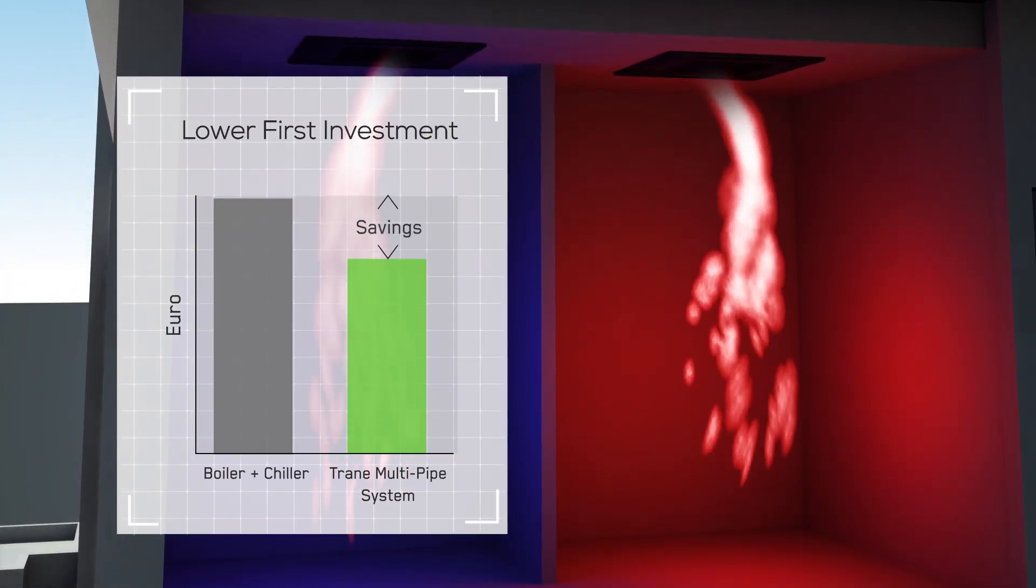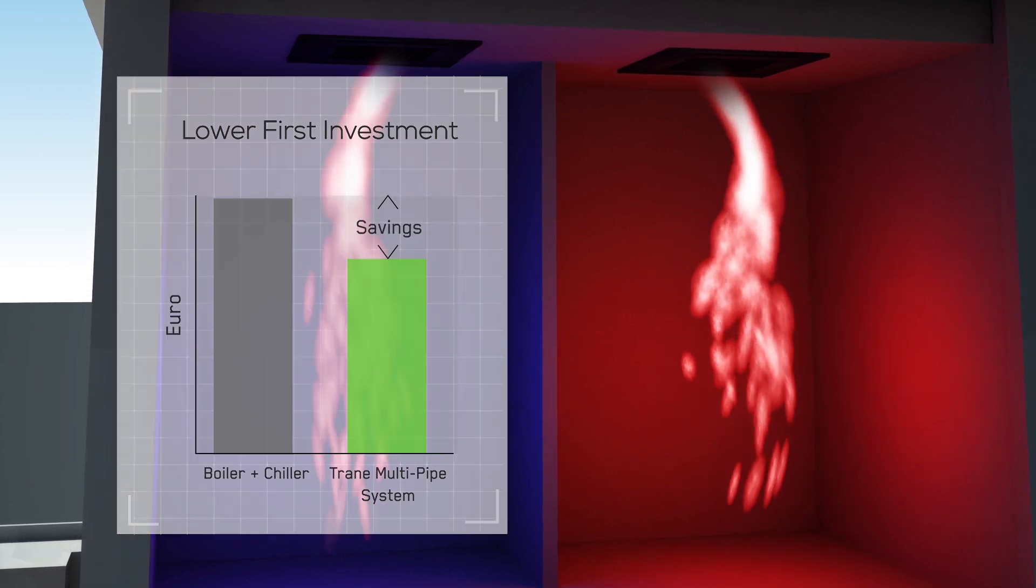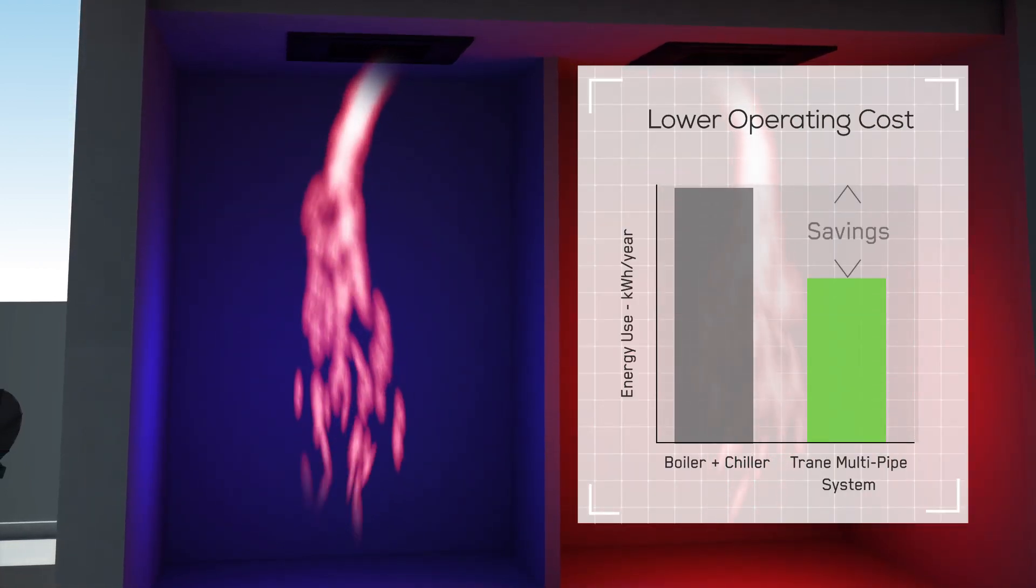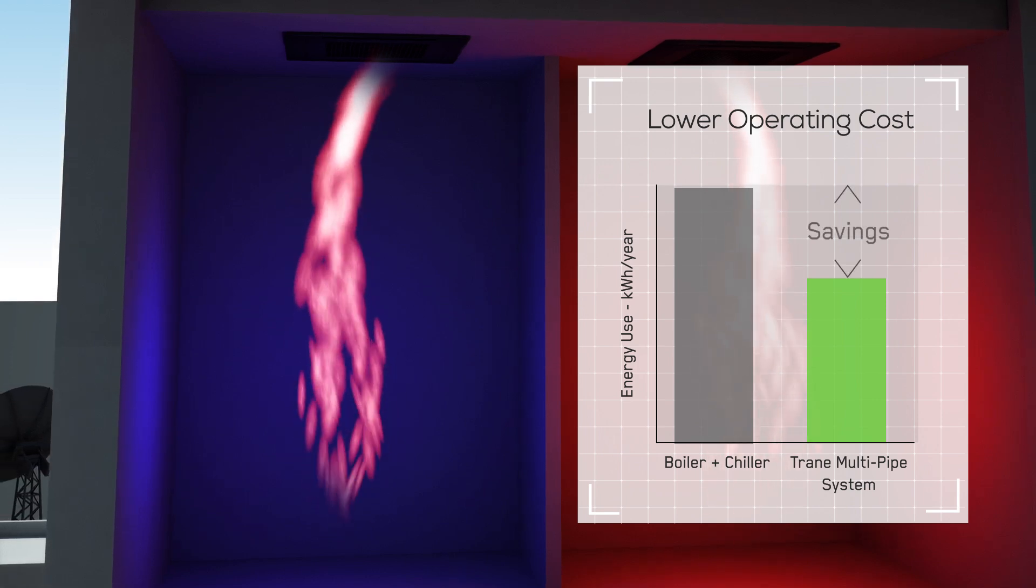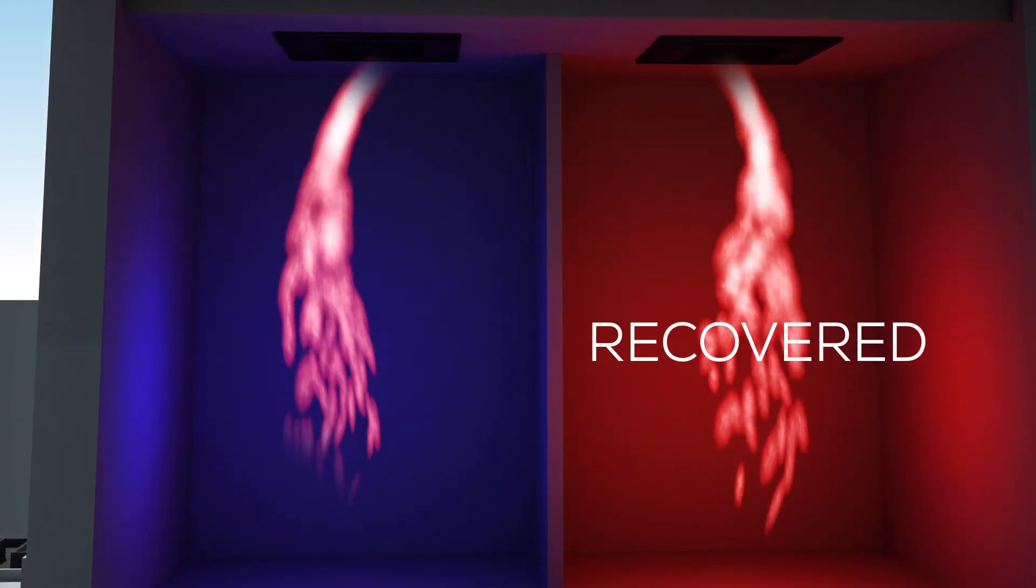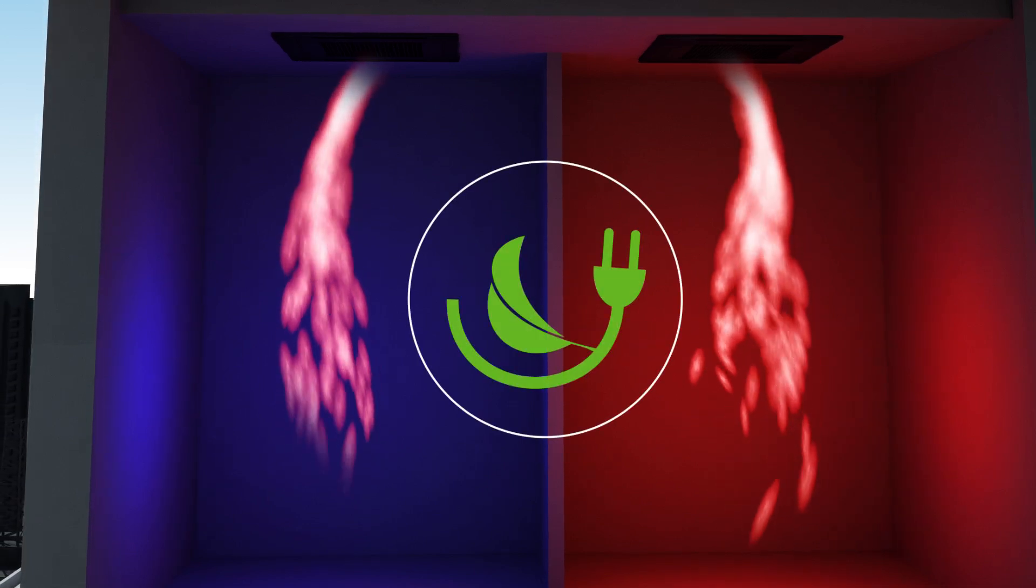Trane's Multi-Pipe Unit lowers first cost expenditures and offers full energy recovery for the best return on every kilowatt hour of electricity. Now you can recover energy that would otherwise have been wasted and save money while reducing impact on the environment all at the same time.